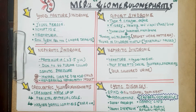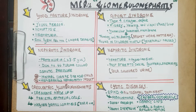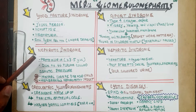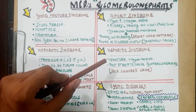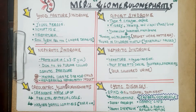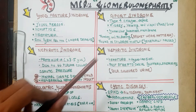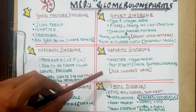In nephritic syndrome, proteinuria is not as marked — it can be 1 to 2 grams per deciliter but not greater than 3.5, which is characteristic of nephrotic syndrome. Nephritic syndrome presents with hematuria plus hypertension. Hypertension occurs because there is simultaneous sodium retention. The scenario which comes in 90% of exams is post-streptococcal infection in children, presenting with cola-colored urine.